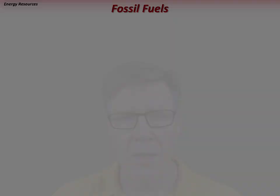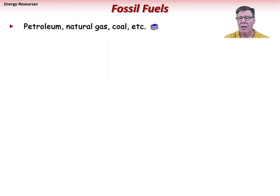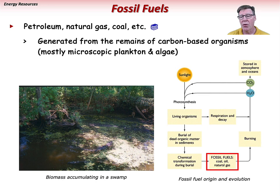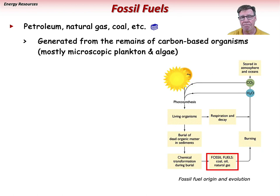The fossil fuels include petroleum, natural gas, and coal. These resources are originally generated from the remains of carbon-based organisms, mostly microscopic plankton and algae. As long as the biomass does not decay, the organic matter contains energy that can survive burial and transformation into various fossil fuel types. The energy you're using to view this lecture, or drive your car, could have originally come from sunshine that helped grow Paleozoic plants — over 300 million years ago. You could be driving on Paleozoic sunshine.